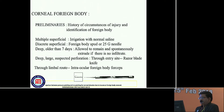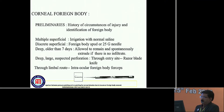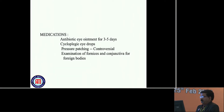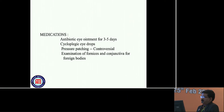For corneal foreign bodies, management starts with history of circumstances of injury and identification of foreign bodies. Multiple superficial foreign bodies: irrigation with normal saline. Discrete superficial foreign body: a spud or 25-gauge needle. Deep, older than 7 days may be allowed to remain and spontaneously extrude if there is no infiltrate. Deep, large, or suspected perforation: through limbal approach with razor blade knife, limbal suture, and intraocular foreign body forceps. Medications: antibiotic ointment for 3 to 5 days, cycloplegic eye drops. Pressure patching is controversial these days.